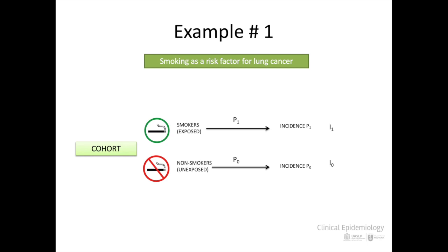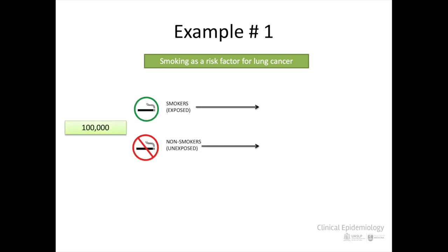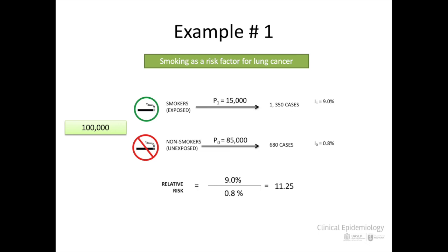In this example, a total of 100,000 people were studied. 15,000 of them, or 50%, were smokers. In this group, 1,350 cases of lung cancer were found — that's a 9% incidence. While in the 85,000 people who did not smoke, only 680 cases were found, an incidence of 0.8%. With this data, we can say that the relative risk for lung cancer in smokers is 11.25 compared to non-smokers.